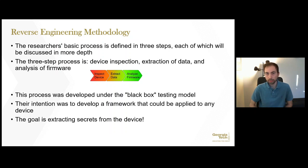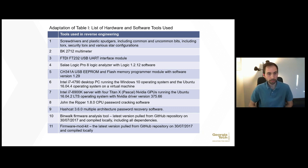The next slide shows a table listing all the tools the researchers used. All the software tools can be obtained freely off the internet, and all hardware tools can be obtained relatively inexpensively, with the exception of the NVIDIA GPU server. However, the majority of this computing power wasn't even needed for the difficulty of passwords obtained, as we will see shortly.